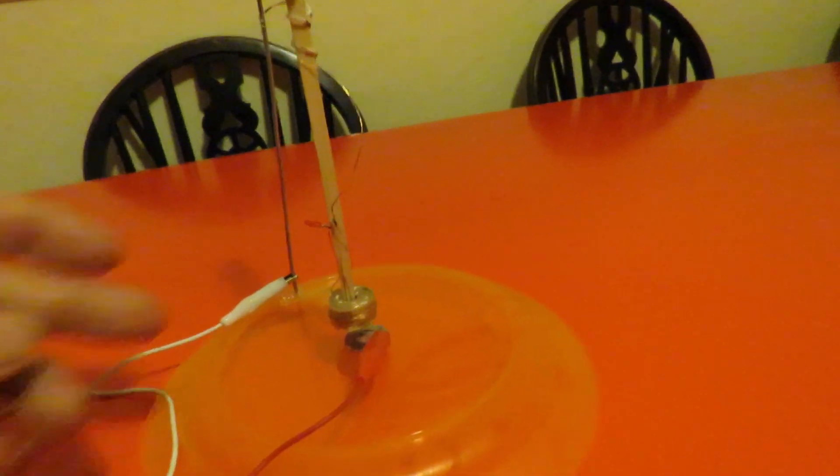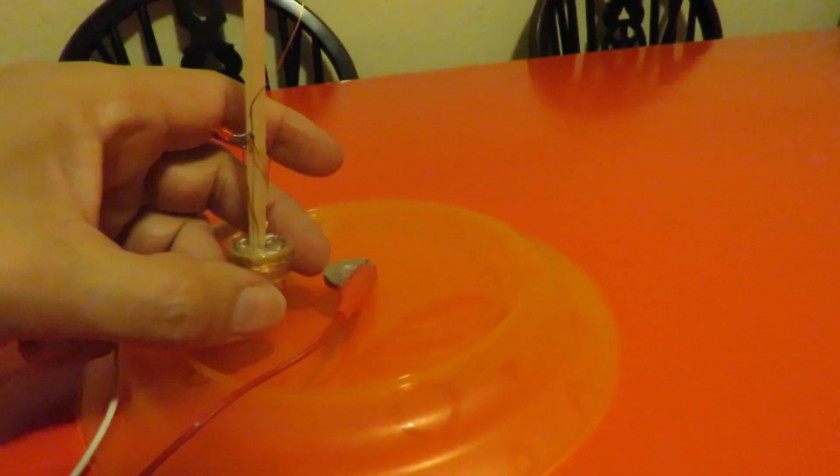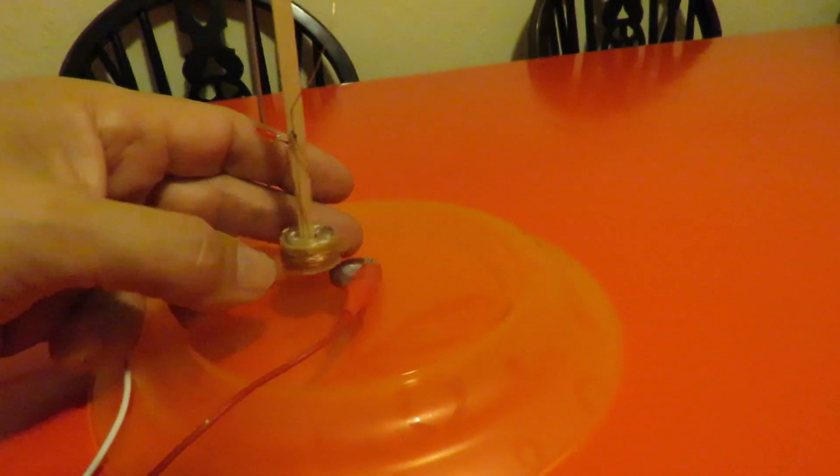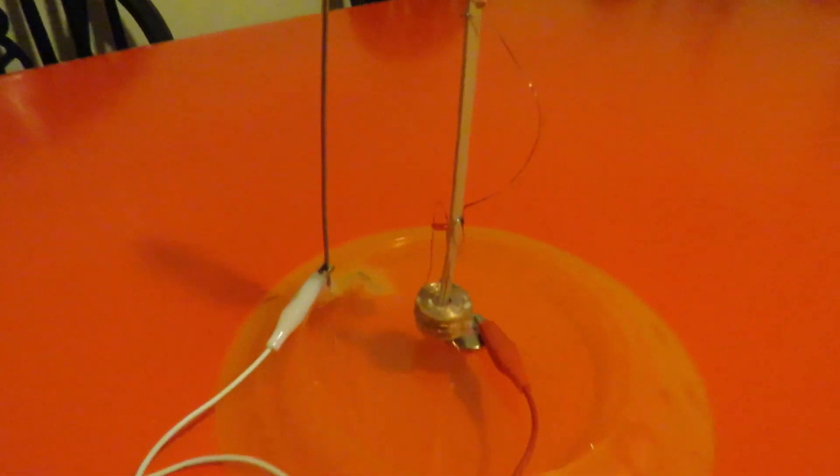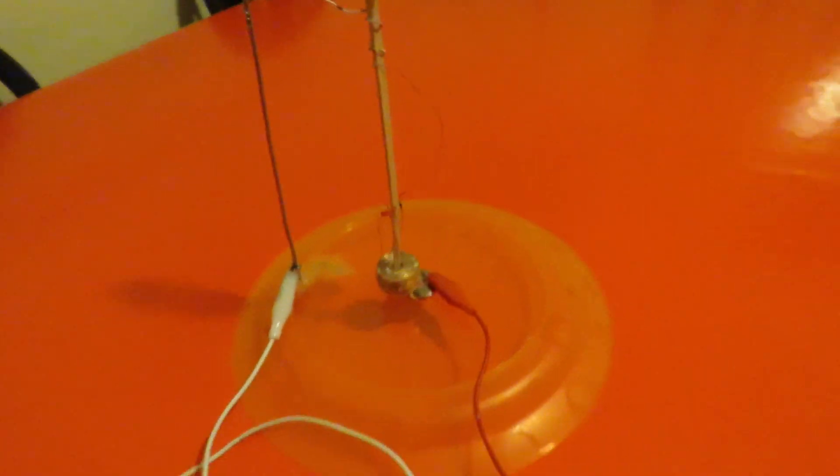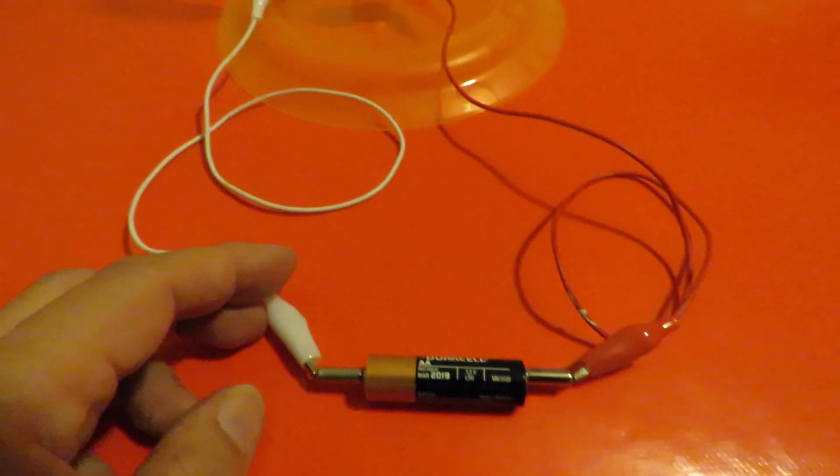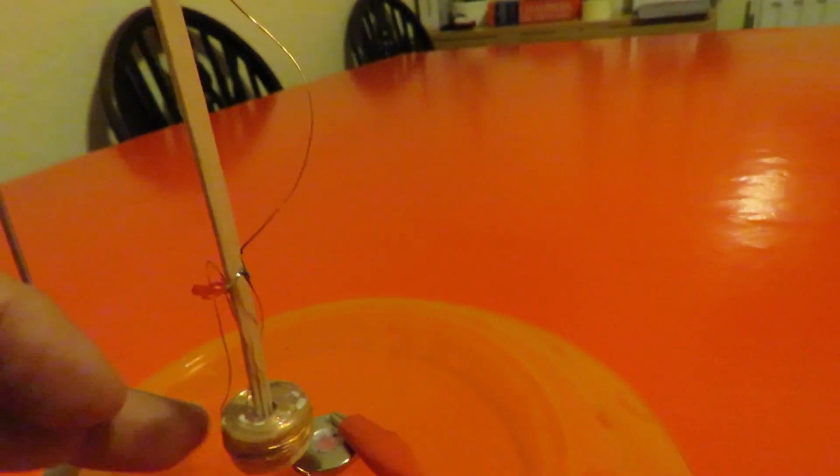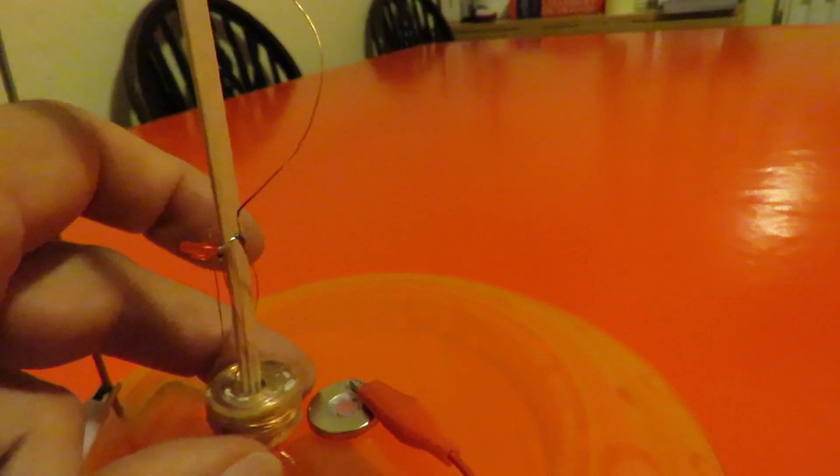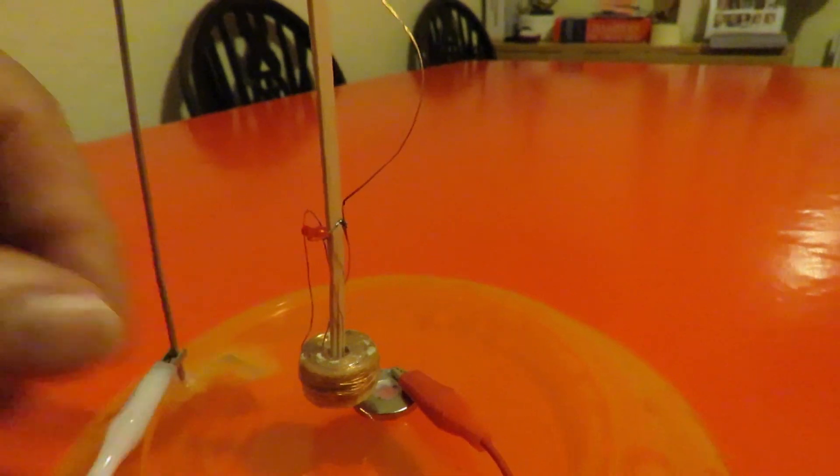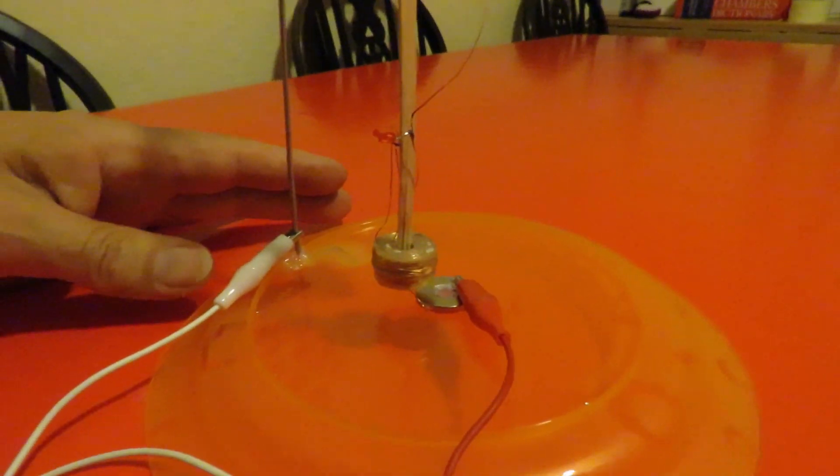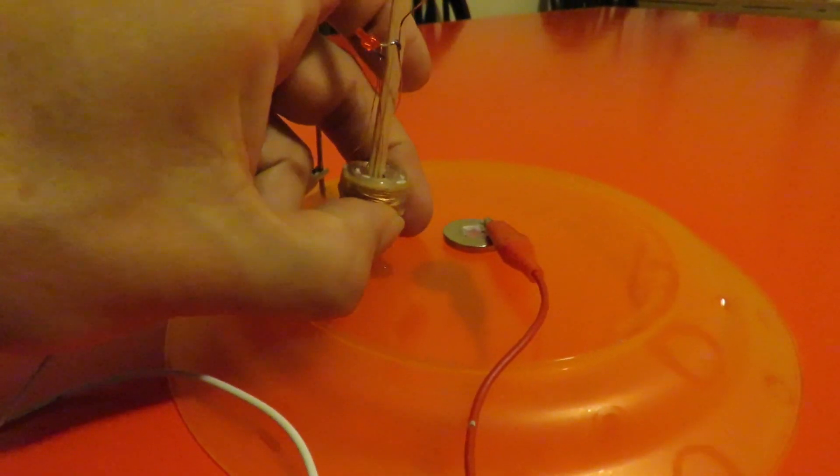So I'll try and position the camera now so we can see that LED lighting up. Because it's not a very bright LED and it's a bit directional too. So I'll connect that on there. Just adjust the bit of wire on the bottom so it's touching the magnet.